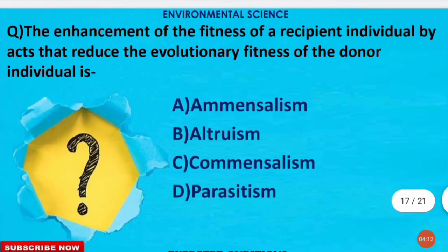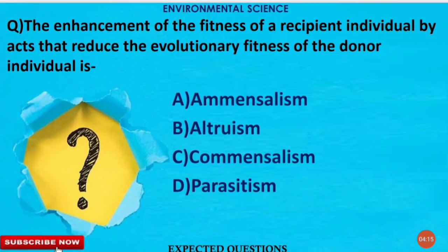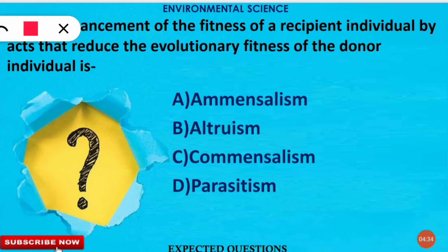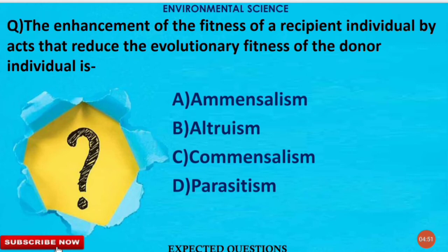The next question is: the enhancement of the fitness of a recipient individual by acts that reduce the evolutionary fitness of the donor individual is called which kind of interaction? The correct option is altruism. In simple words, altruism is a behavior by an individual that increases the fitness of another individual while decreasing its own fitness. Remember this term — altruism.